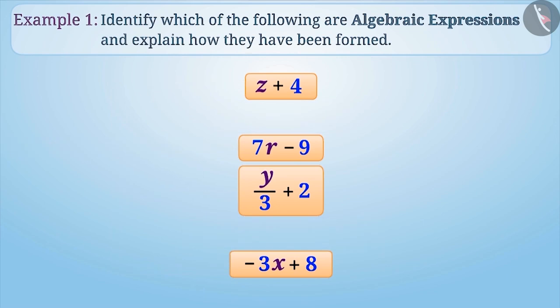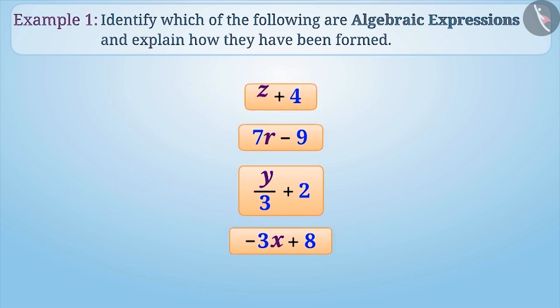Let's understand how algebraic expressions are formed. z plus 4 is formed by adding 4 to the variable z. 7r minus 9 is formed by multiplying variable r by 7 and then subtracting 9 from the product.